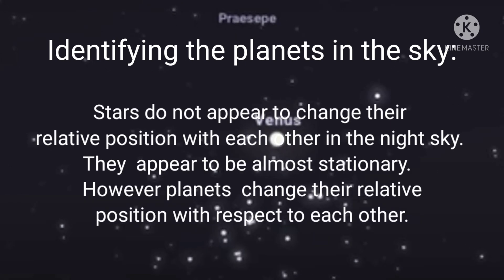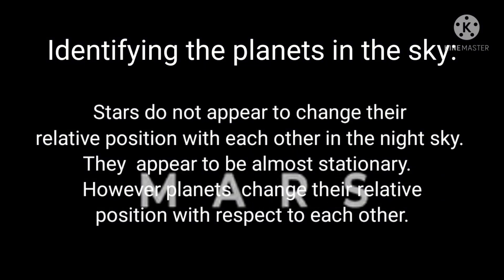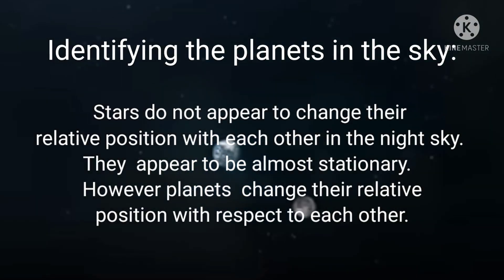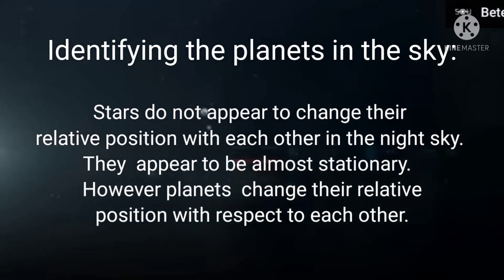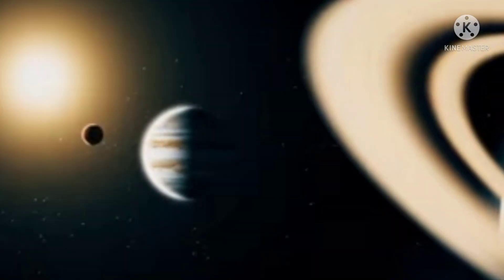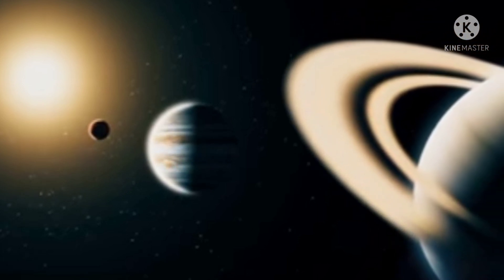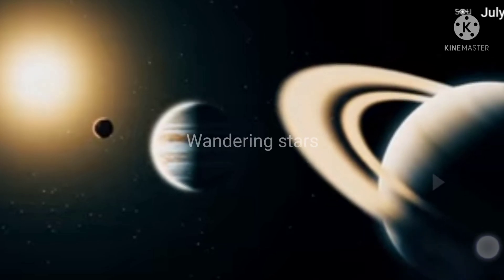Stars do not appear to change their relative position with each other in the night sky. They appear to be almost stationary. However, planets change their relative position with respect to each other. They appear to move against the background of stationary stars. This was the reason why ancient people named them as planets, which means wandering stars.